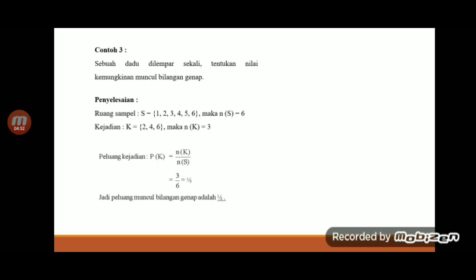Berarti untuk peluang atau kemungkinan munculnya bilangan genap itu adalah ruang kejadian dibagi ruang sampel, berarti sama dengan 3 dibagi 6, atau boleh disederhanakan menjadi setengah. Kita lanjut soal yang keempat.